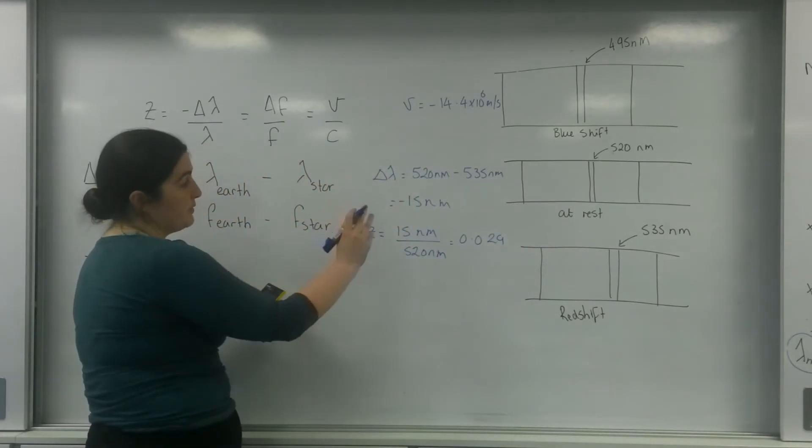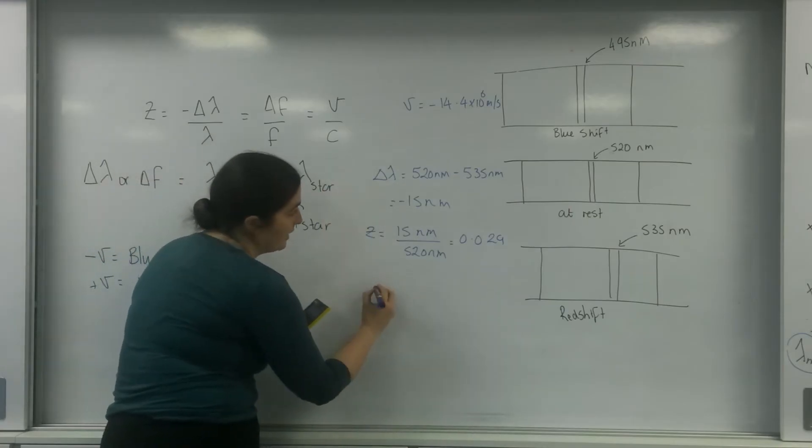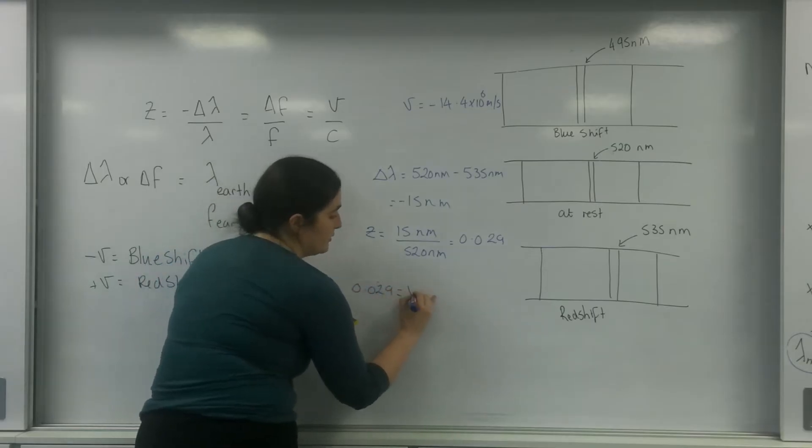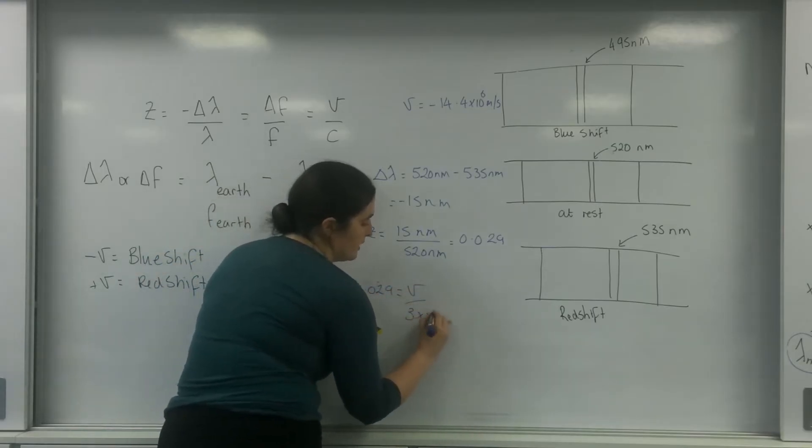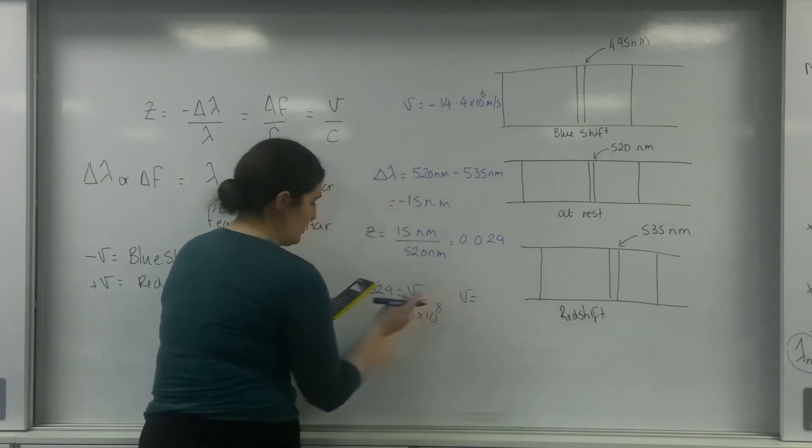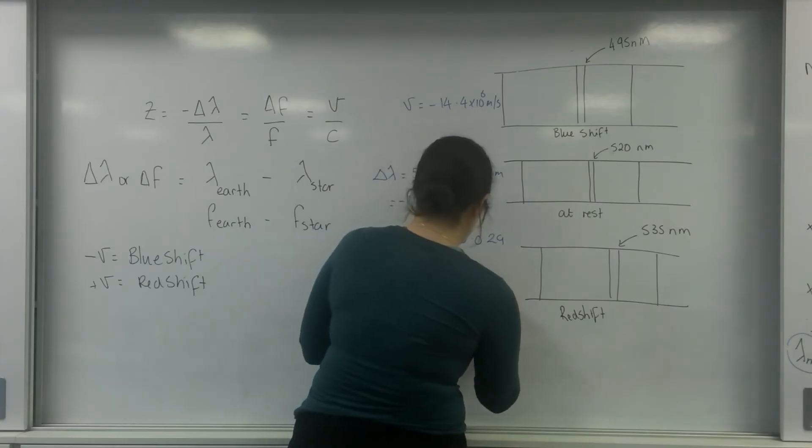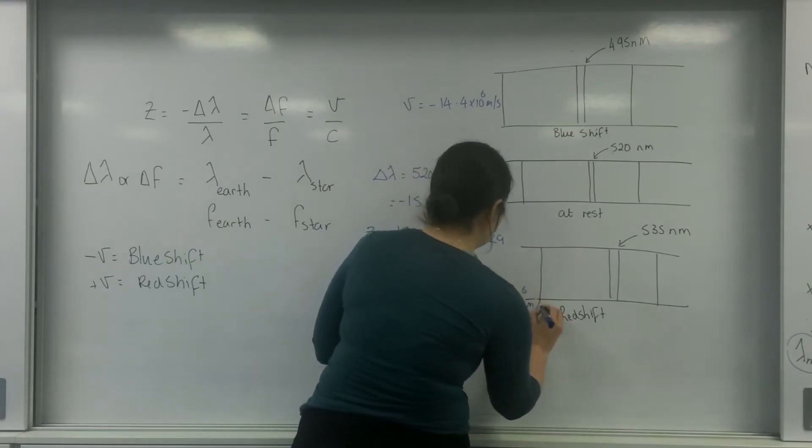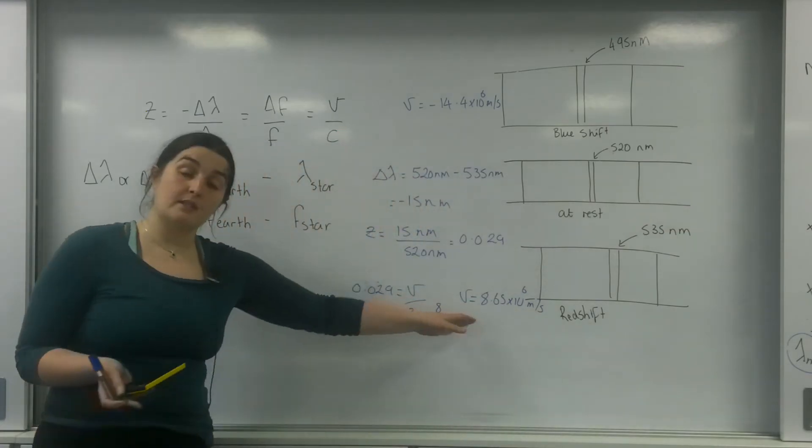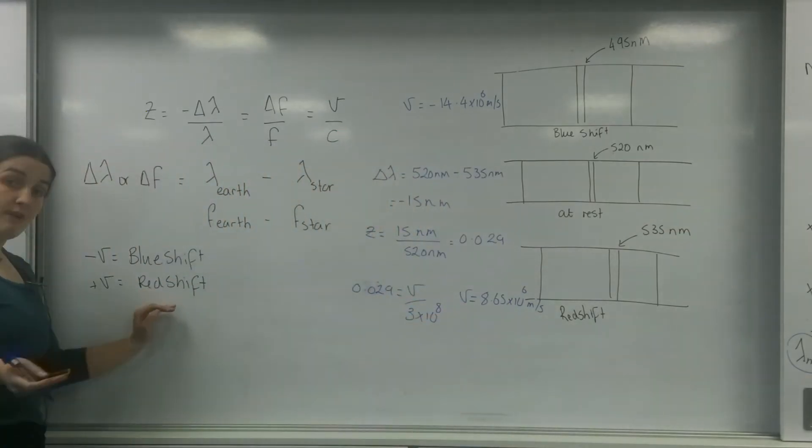So putting that into my original formula, I know that I've got a positive now. So 0.029 is V over 3 times 10 to the 8. So velocity equals 8.65 times 10 to the 6 meters per second. And that's a positive number. So that is red shifting.